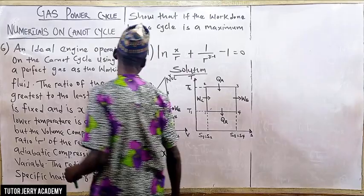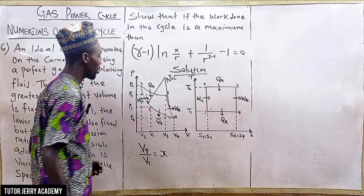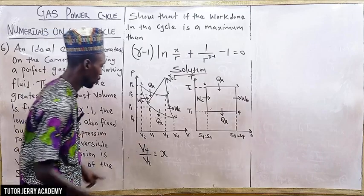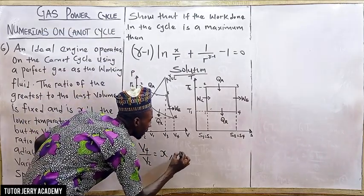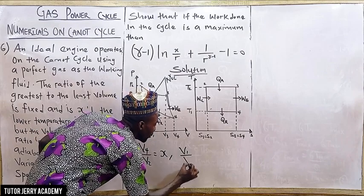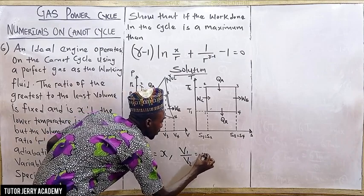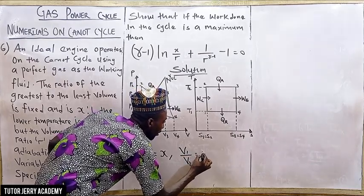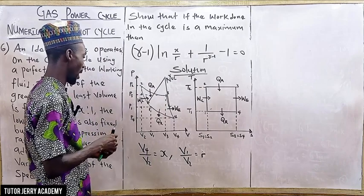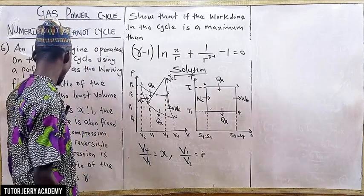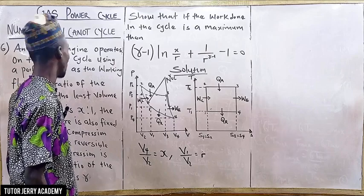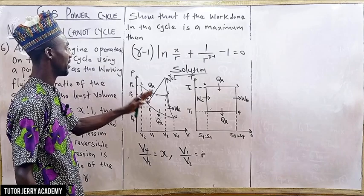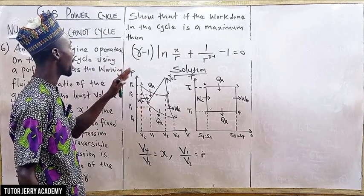The compression ratio r is nothing but V1 over V2, so V1 over V2 equals r. They gave us gamma and we need to show that if the work done in the cycle is a maximum, then the derivative equals zero.